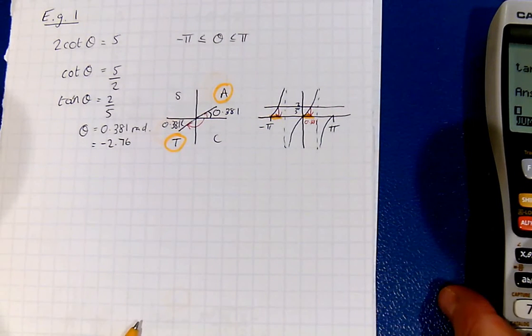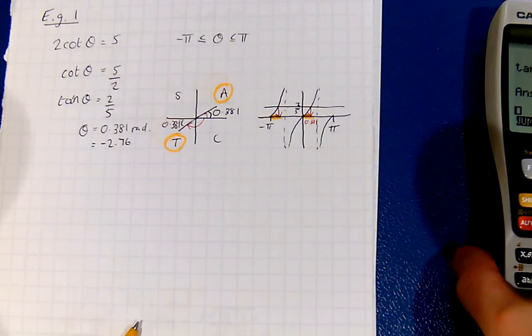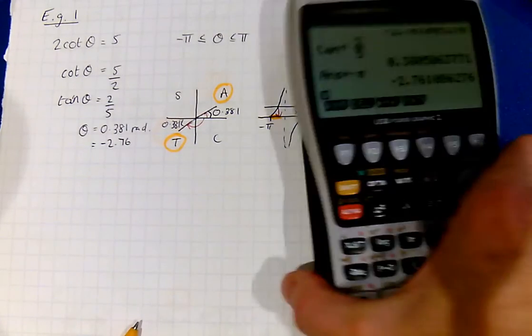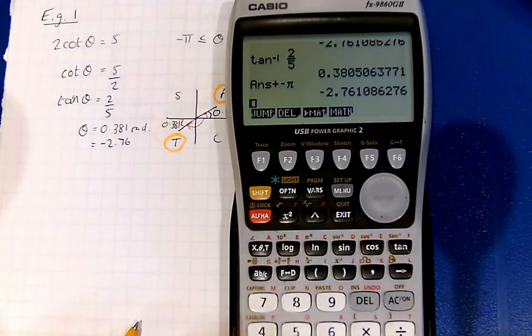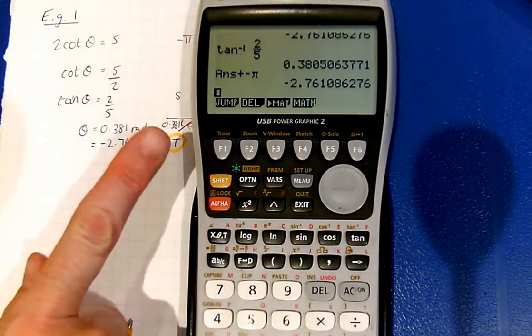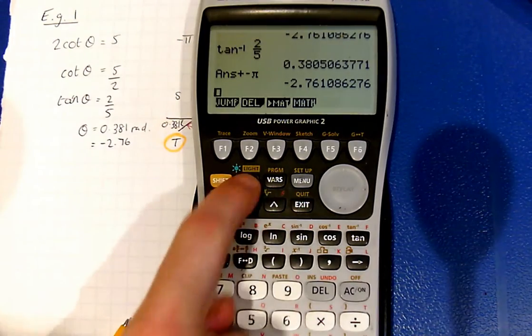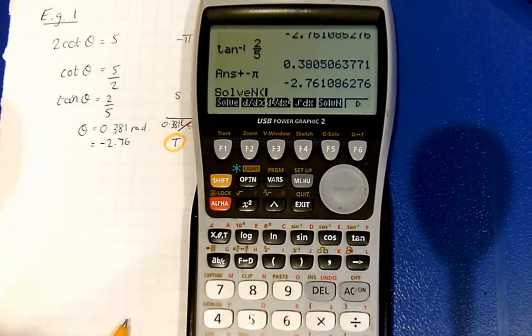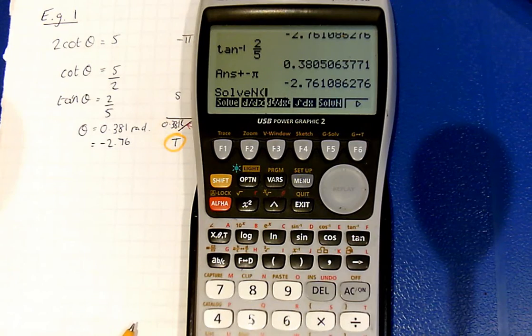Now, if the question didn't say determine or show detailed reasoning, then we can use the calculator to work out our answers. So we've got two ways to do it. If we are in run mode, we're going to go options, calc, and then solve n. Now we type in the equation.